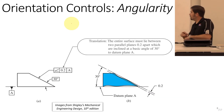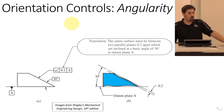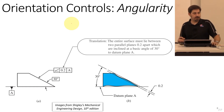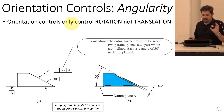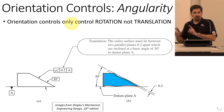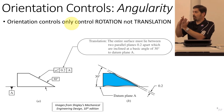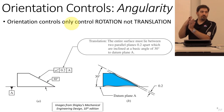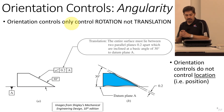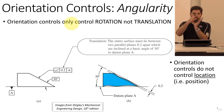Those were form controls. Now we move to orientation controls. The first is angularity. Any orientation control only controls rotation, not translation — it has nothing to say about positioning or where the feature occurs, only how far it is angularly away from some datum.